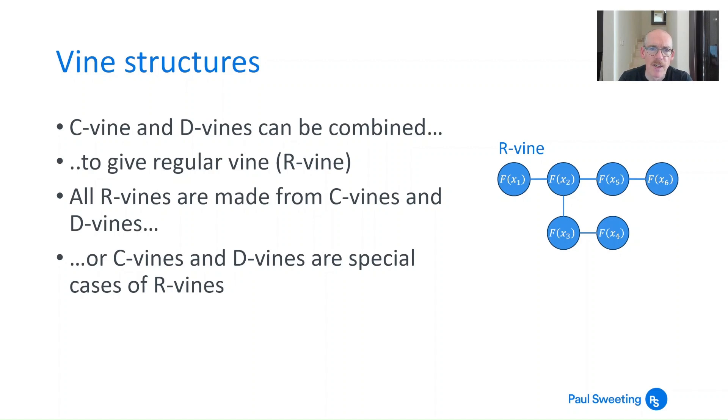So C-vines and D-vines can be combined to give a regular vine, an R-vine. And when we're looking at vines in real life they'll rarely be either a C-vine or a D-vine. It's probably going to be something more complicated. Having said that all R-vines are made from either C-vines or D-vines, or a combination of them. Or to put it another way, a C-vine or a D-vine is a special case of an R-vine. So if I just take off f(x6) and f(x4), what I'm left with is a C-vine. If I take off f(x5) and f(x6), what I'm left with is a D-vine. Or if I take off f(x3) and f(x4) again, what I'm left with is a D-vine.